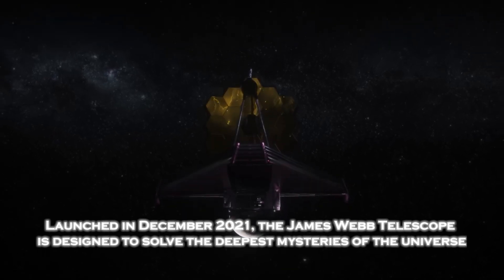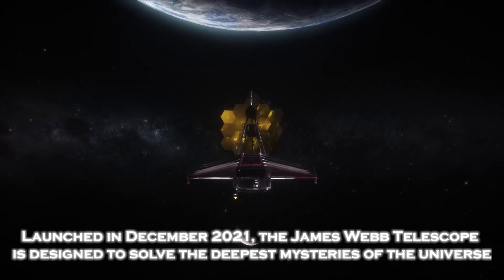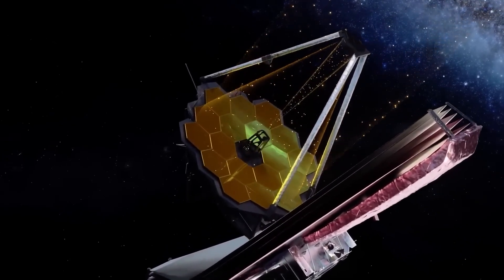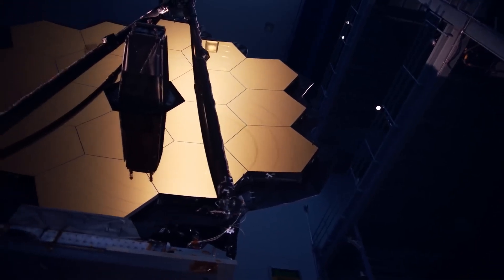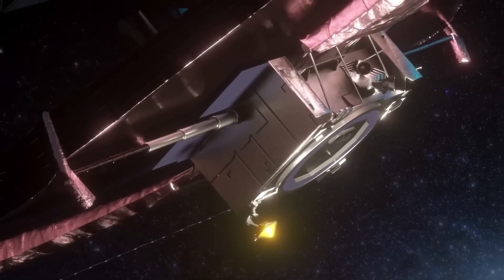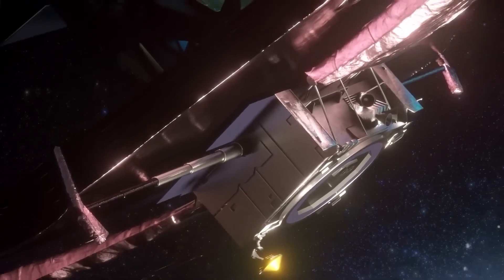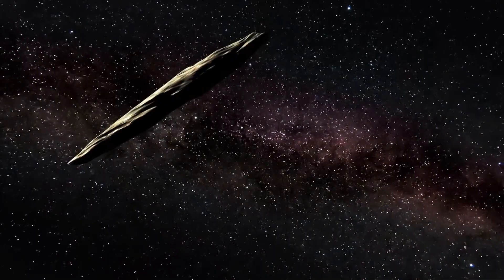Launched in December 2021, the James Webb Telescope is designed to solve the deepest mysteries of the universe. Its ability to observe the infrared spectrum allows it to capture details impossible for other telescopes. When Webb turned its gaze toward Oumuamua, now much further from our solar system, it captured something incredible: the first real image of this mysterious interstellar object.